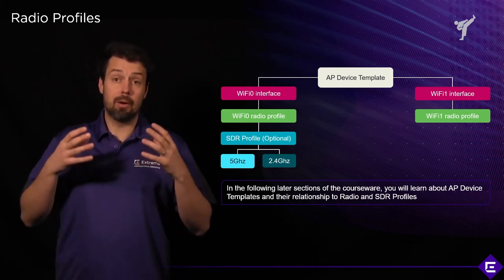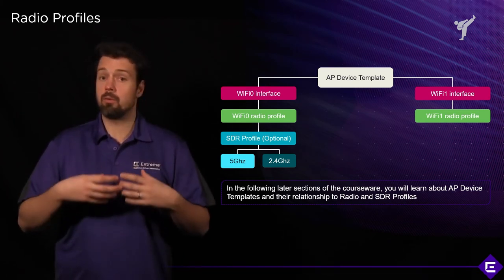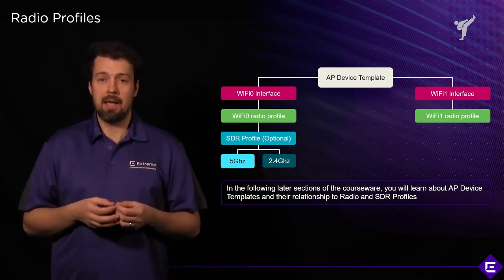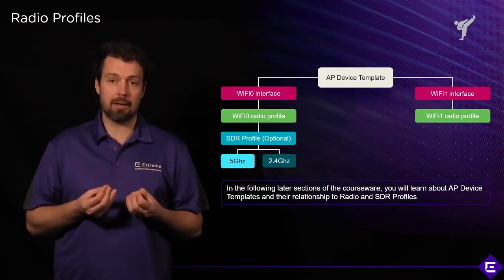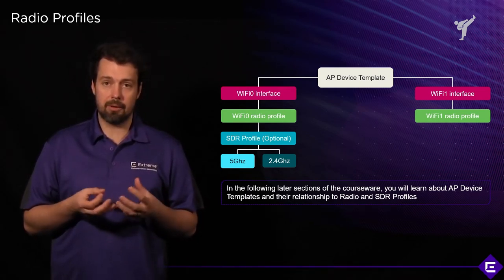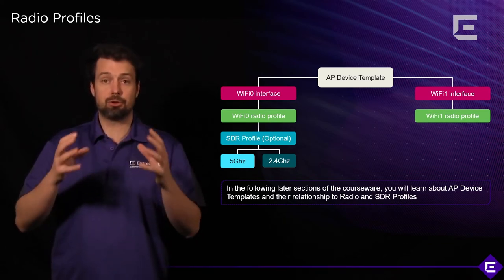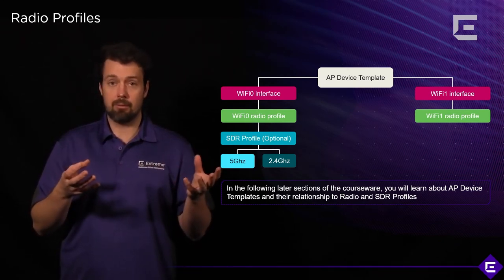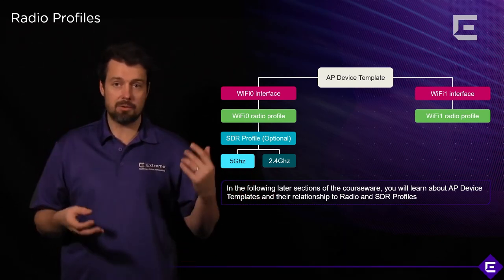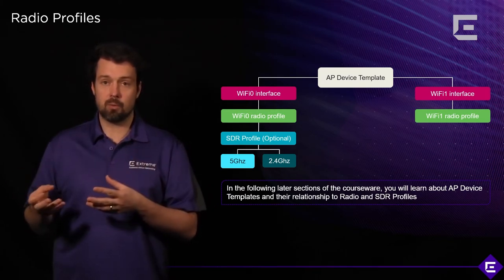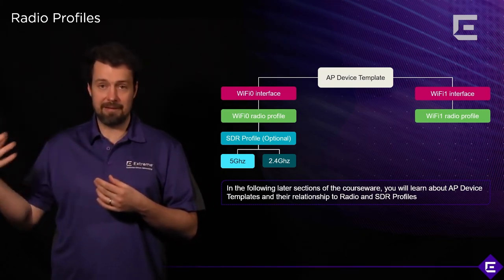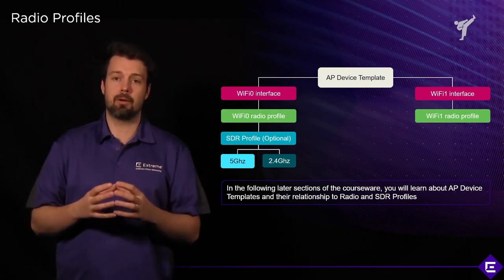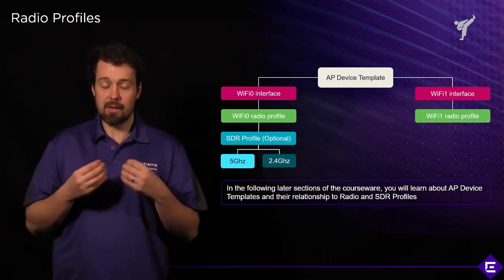Radio profiles determine how your radios and access points are configured. You apply radio profiles to an access point, a group of access points, or a location using something called a device template. The device template is a very powerful object within Extreme Cloud IQ — it distributes the same configuration to groups of devices. For APs, we configure radio profiles and turn radios on and off; for switches, we configure ports, port types, and VLANs.